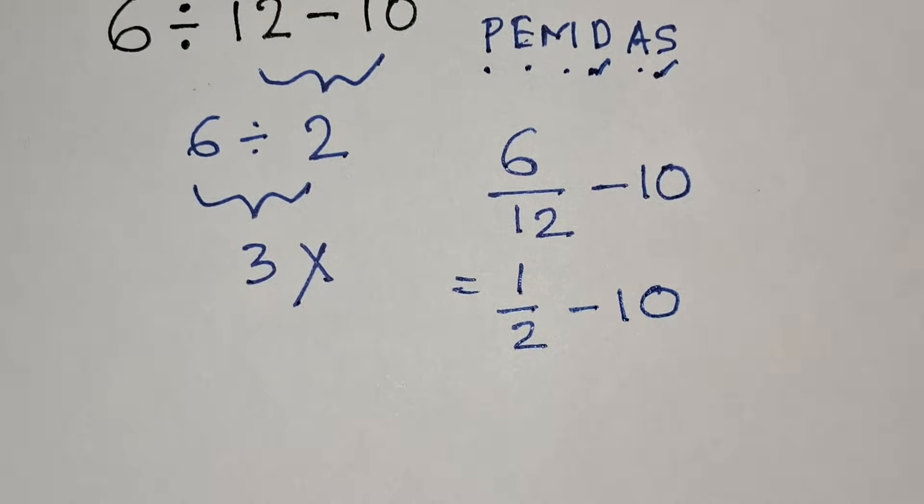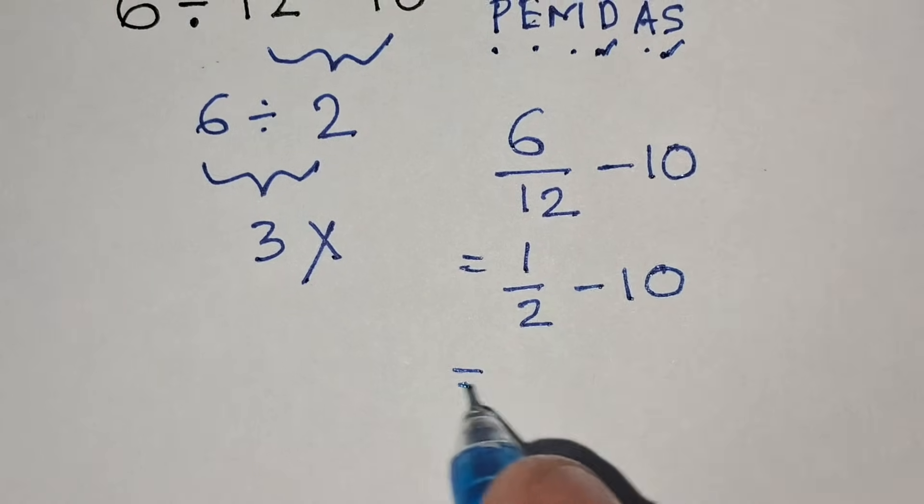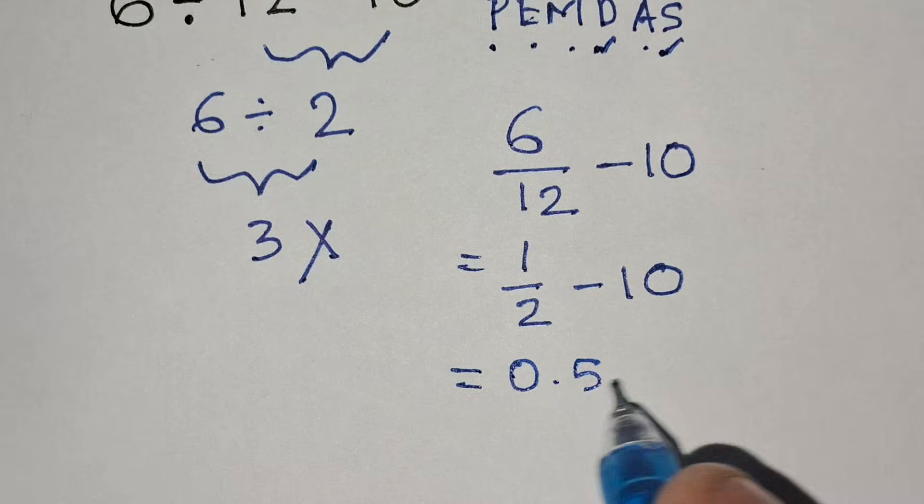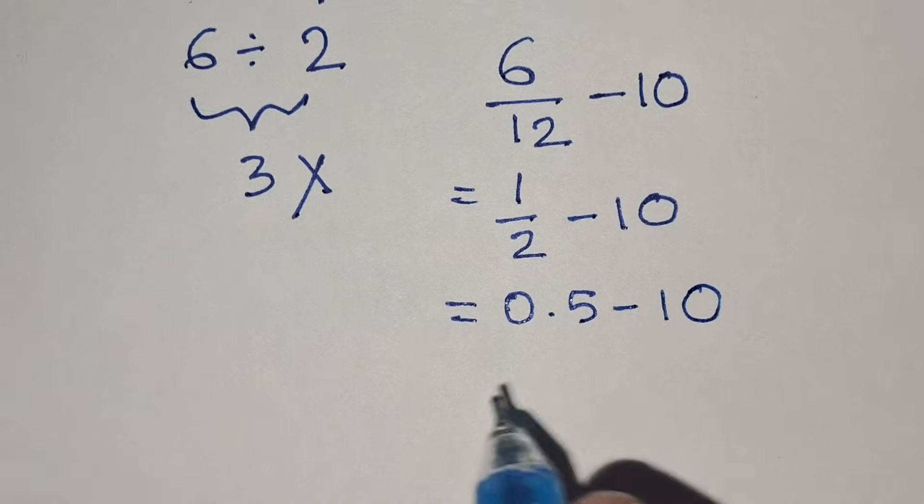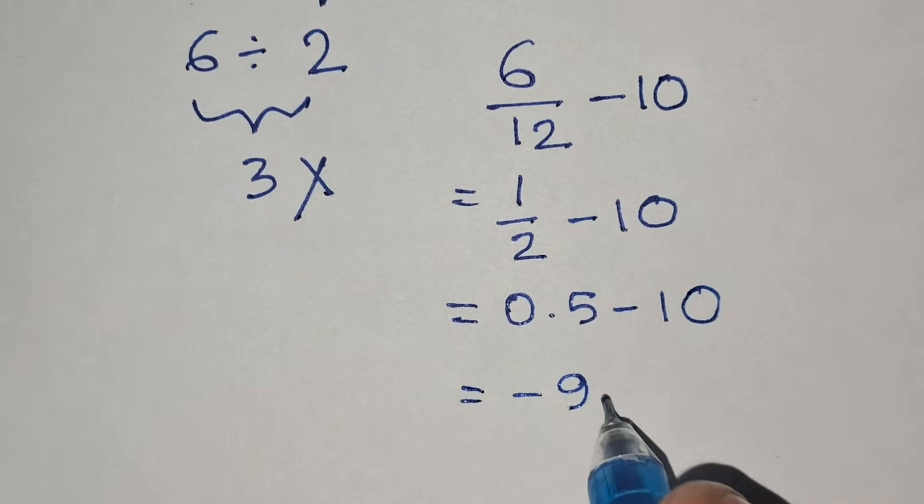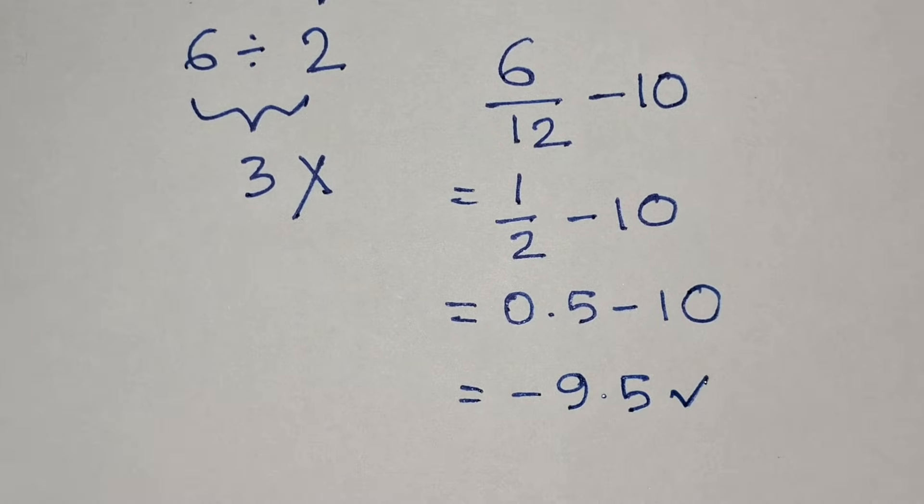We can write 1/2 as 0.5 minus 10, which equals negative 9.5. This is the correct answer for the expression.